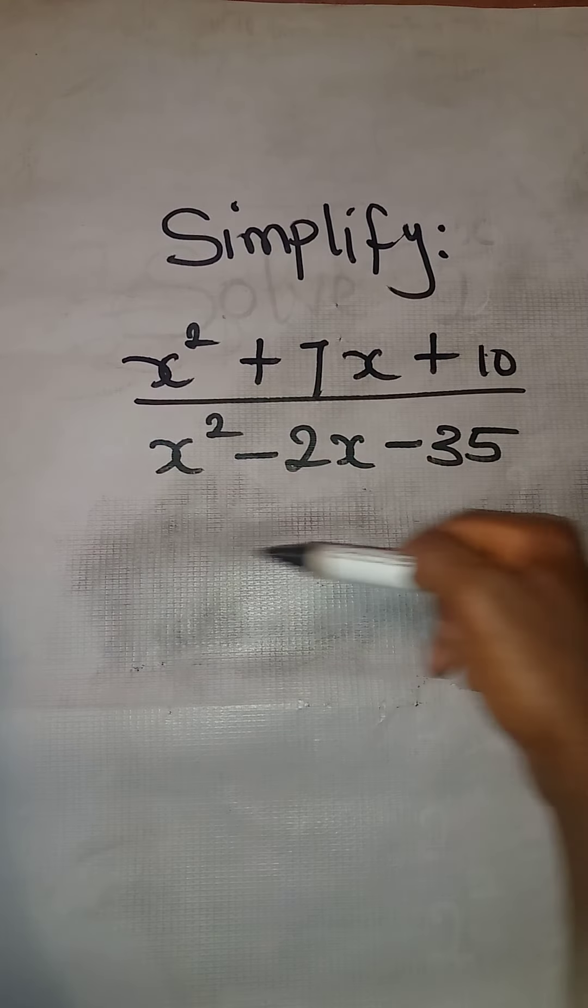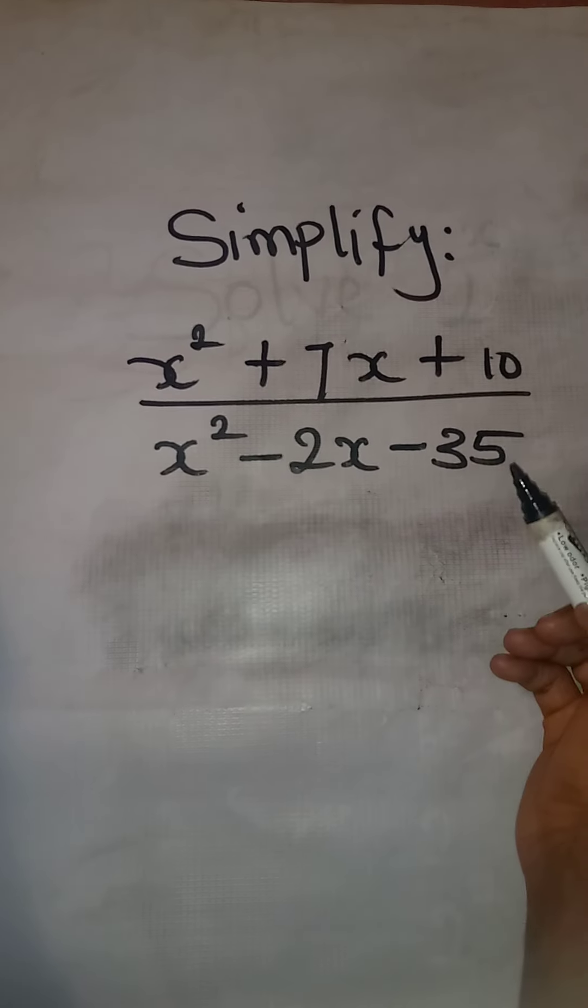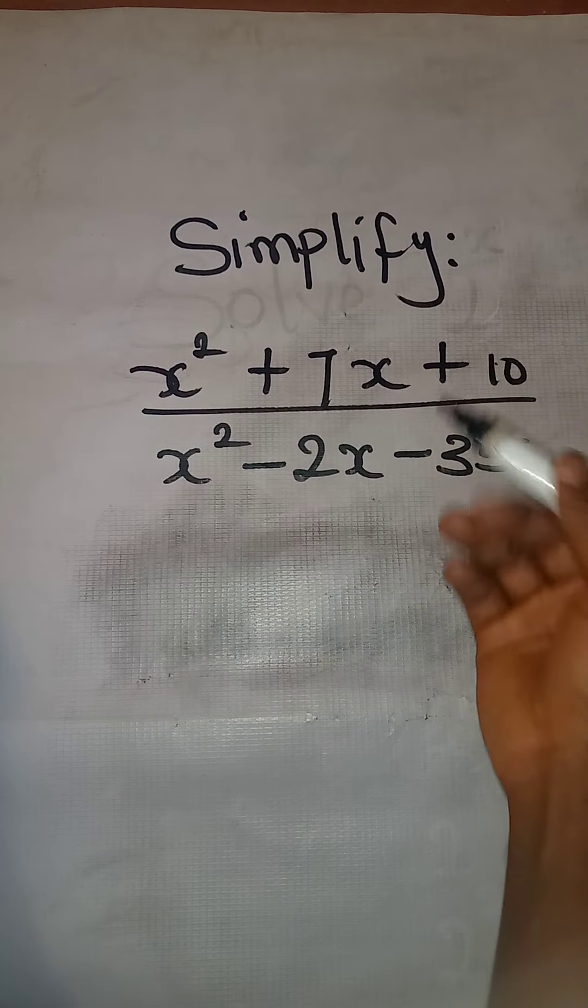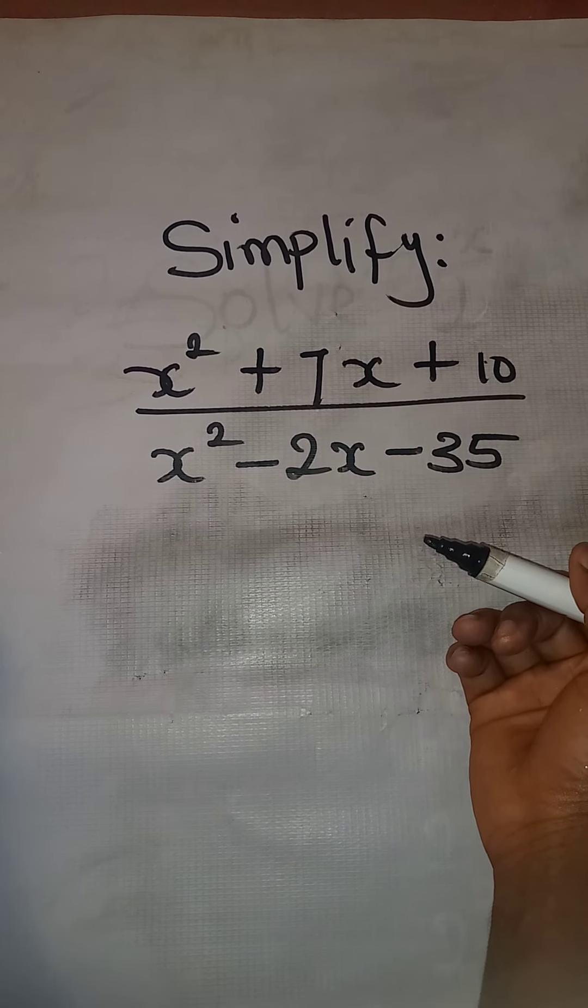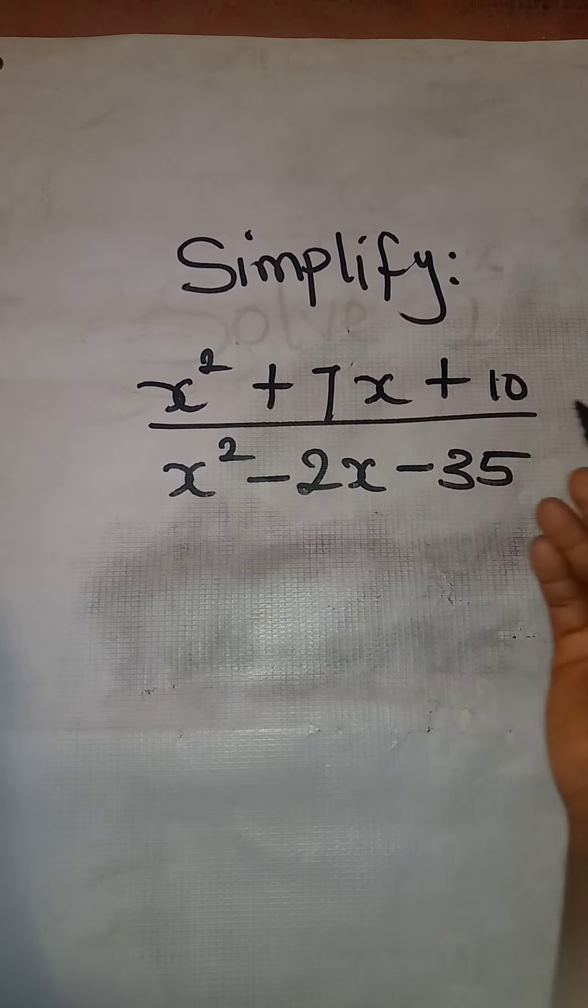This is a fraction and we have to simplify it. Simplifying this fraction means reducing the fraction to its lowest term. And the way to go about it is to cancel out the fractions.